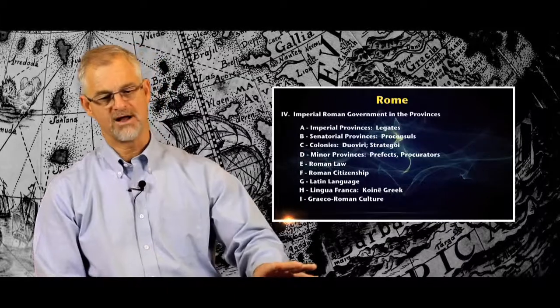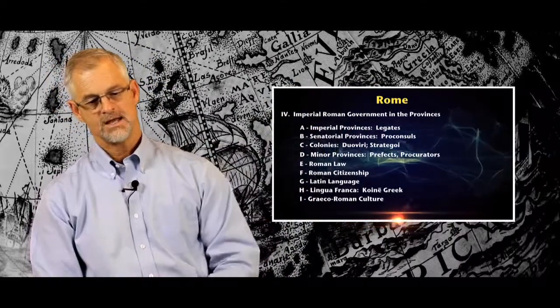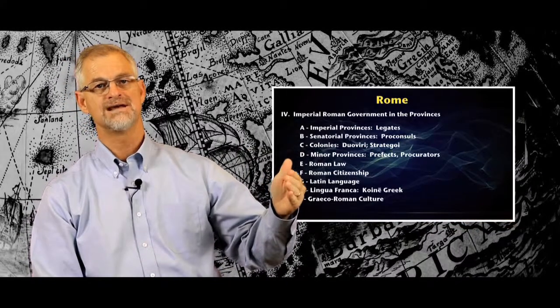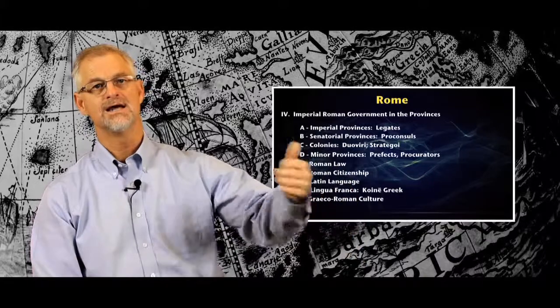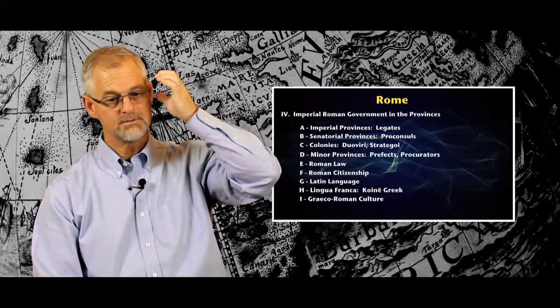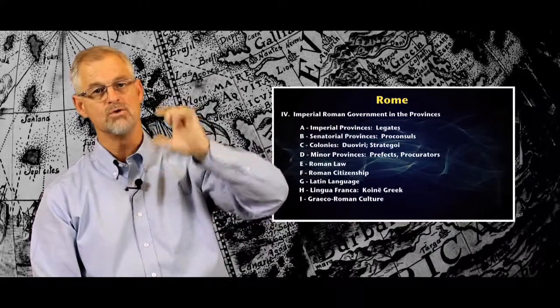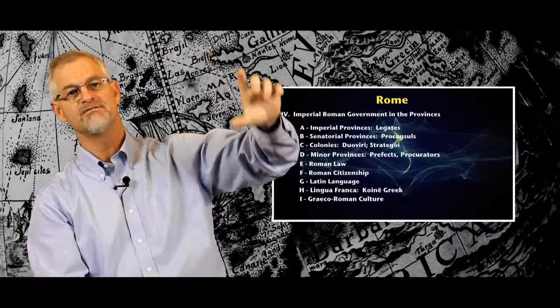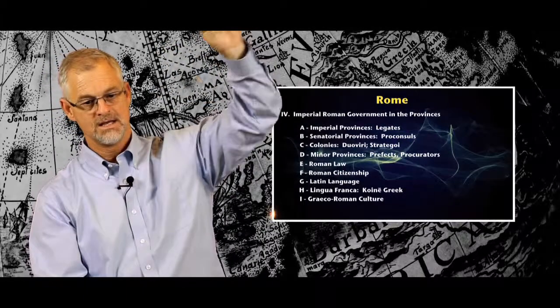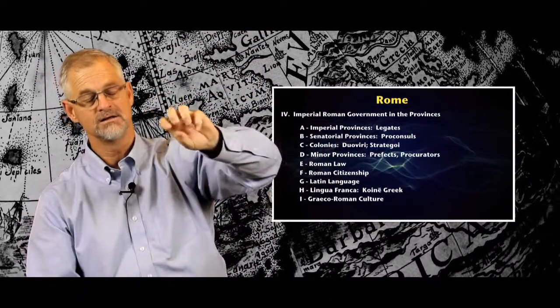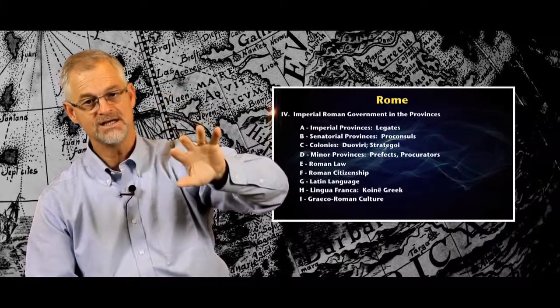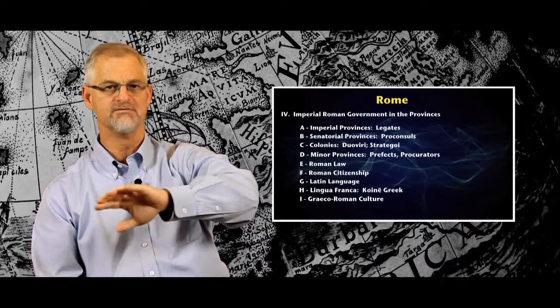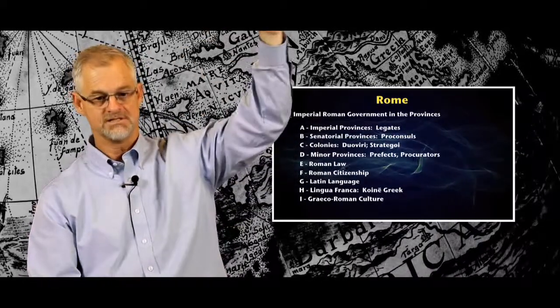Then there are minor provinces that tend to be under the authority of the larger provinces, and those minor provinces will have minor governors with titles like prefect and procurator. This is important for the New Testament because initially the Roman province of Judea is under the auspices of the Roman imperial province of Syria. The Roman leader, governor of Judea is going to be called initially a prefect and later a procurator under the supervision of the legate of Syria up north.